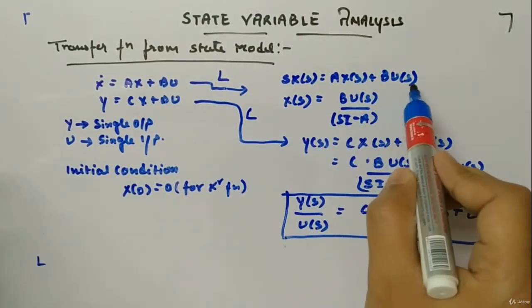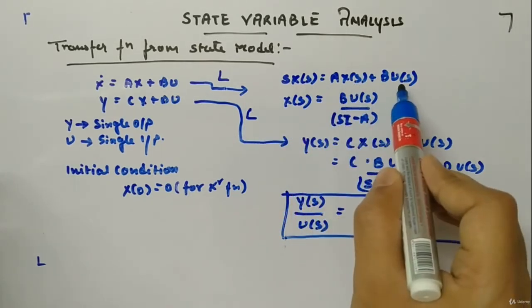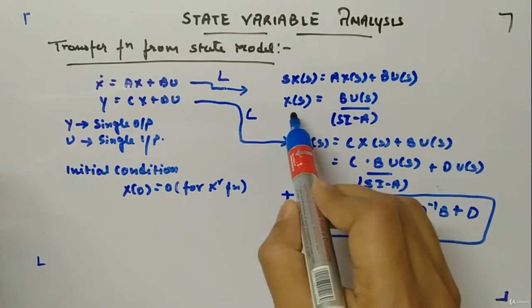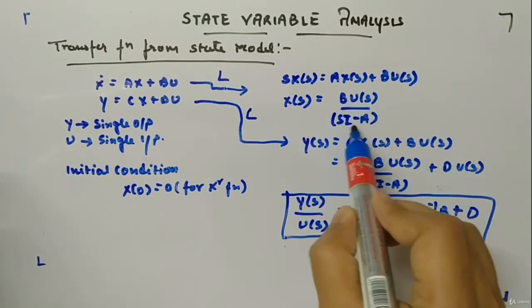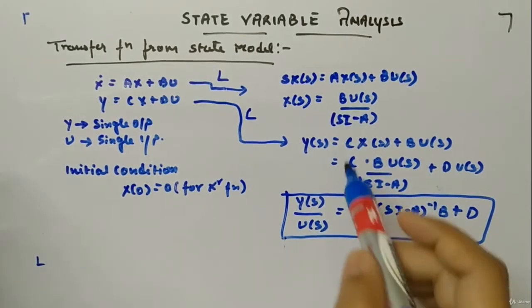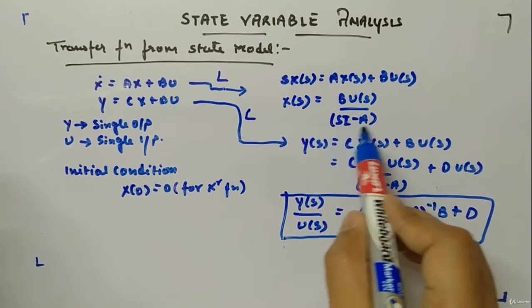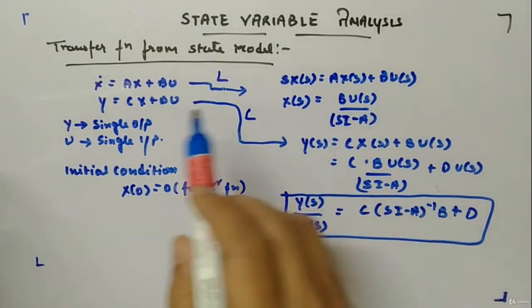So taking X(s) on one side, X(s) and BU(s) on one side, so X(s) will be equal to BU(s) divided by (sI - A). sI because A is a matrix, so identity matrix is multiplied with s here in the denominator.